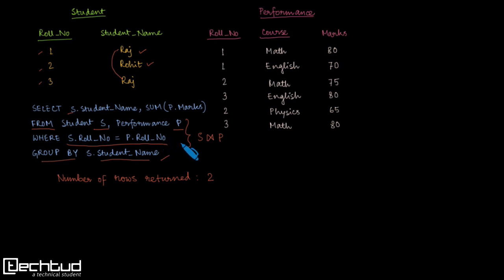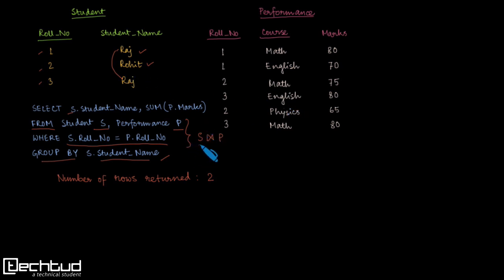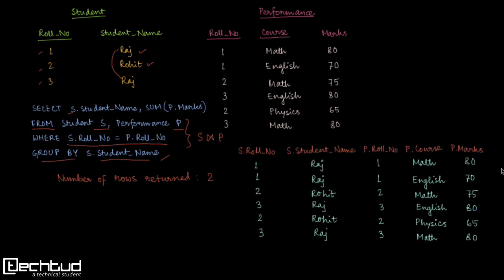Now let us go inside the query and look at the intermediate result so things become more clear. After doing the Cartesian product and then ensuring the roll numbers from both sides are the same — that is the natural join — let me write down what the result of the natural join of these two tables will be.